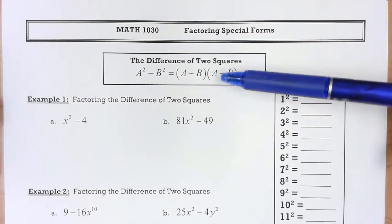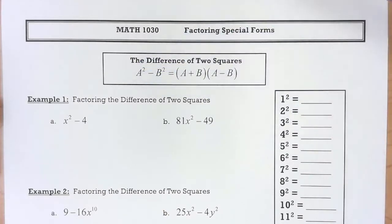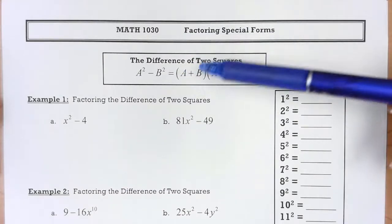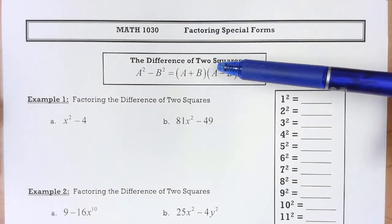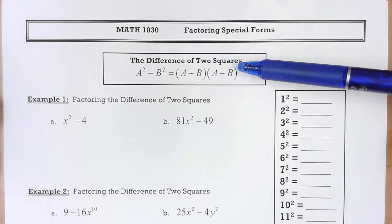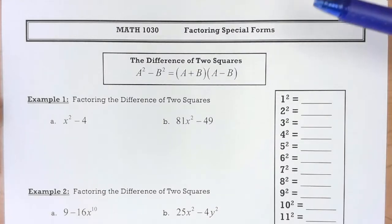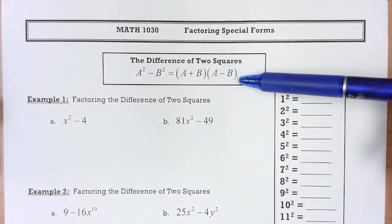Notice the signs are different. If you FOIL this, you'll have a times a, which is a squared, a times negative b, which is negative ab, positive b times a would be positive ab, and last times last would be negative b squared. I said negative ab plus ab. The middle two terms eliminate themselves, and the only way that can happen is if it's in this form.